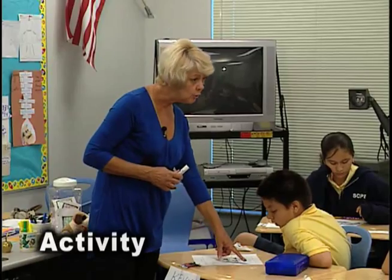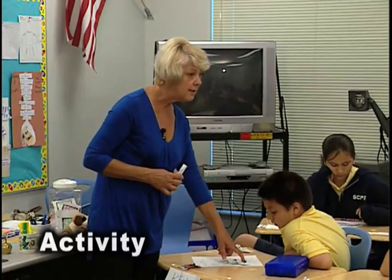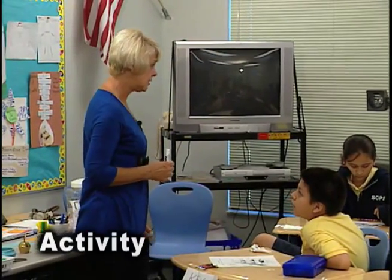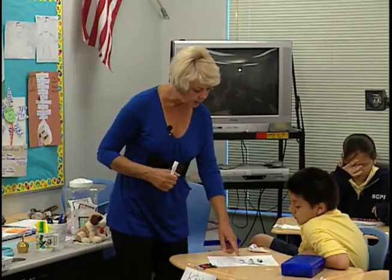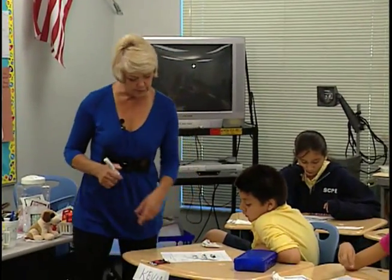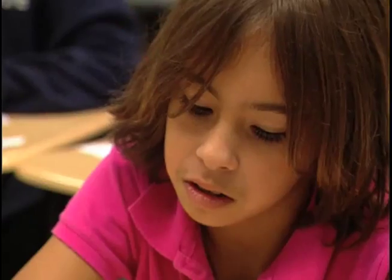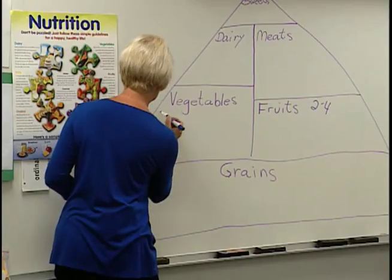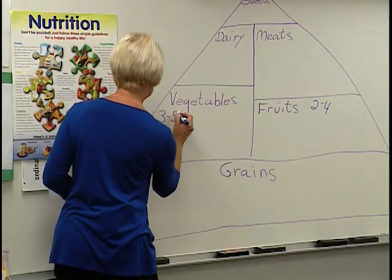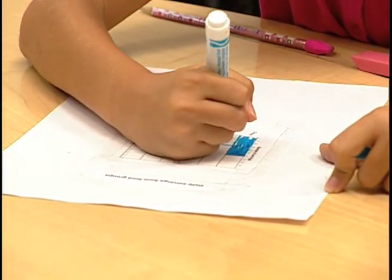Spread those around and look. How many servings should you have of vegetables? Raise your hand if you can tell me. Hannah, how many servings of vegetables are we supposed to have? Three. Three to five. So let's color in three boxes for vegetables.